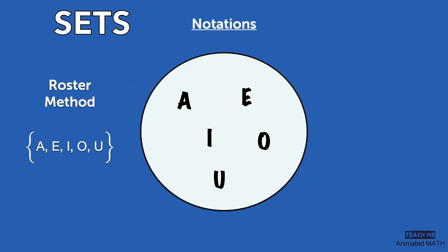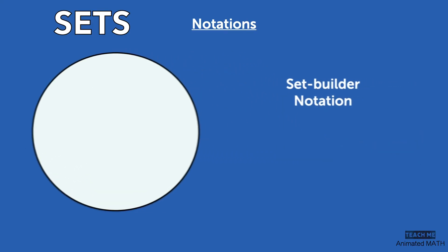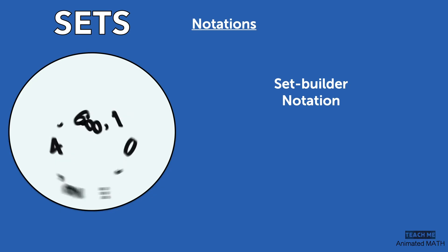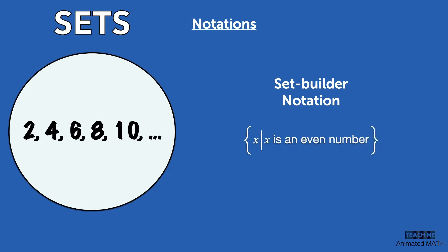Another way to show a set is called the set builder notation. Here you use a description fit for all the elements of the set. This is read as the set of all elements x such that x is a vowel. This is often used for sets with an infinite number of elements. For example, the set of even counting numbers.